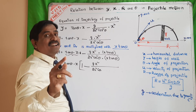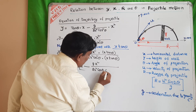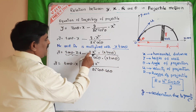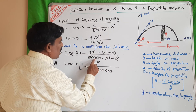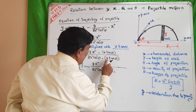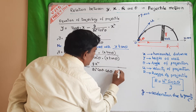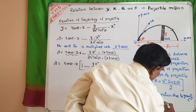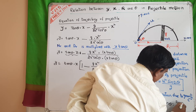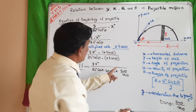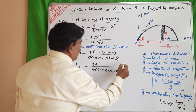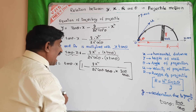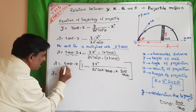Now, cos² theta can be written as cos theta into cos theta. With x tan theta taken outside, we have g x² divided by 2u² cos theta into cos theta. Tan theta can be written as sin theta by cos theta. Substituting this, cos theta cancels with cos theta in the denominator.